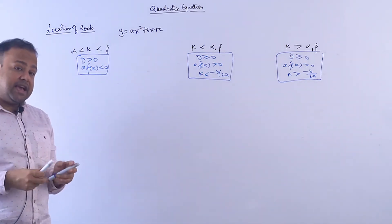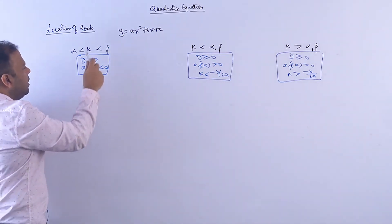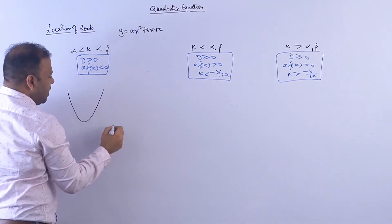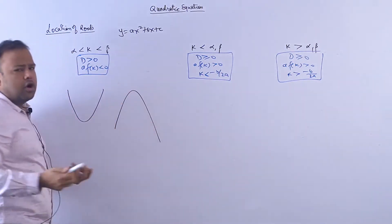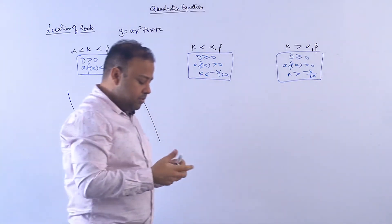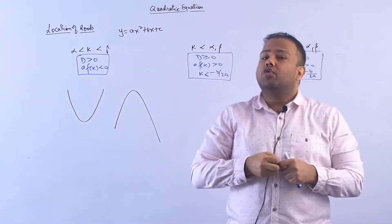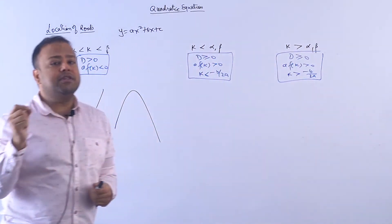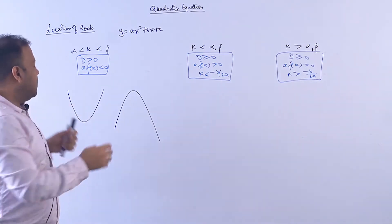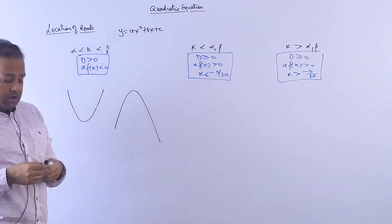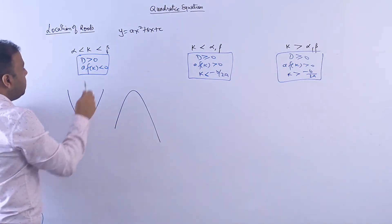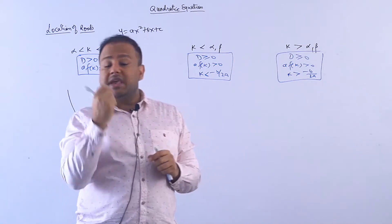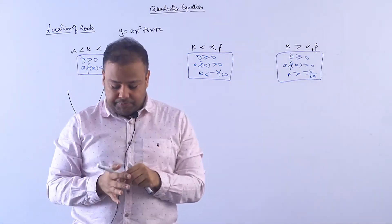Now how did this come? Suppose the parabola is either upward or downward — there is no other possibility. Because the quadratic expression ax² + bx + c represents a vertical parabola, it is either upward or downward. Now it is written that k lies between alpha and beta, meaning some number k is between both roots.